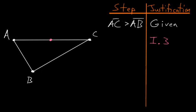And we can cut it off at this point here, which we can label D. So now we have that AD is equal to AB, and using postulate number 1, we can connect the points D and B.